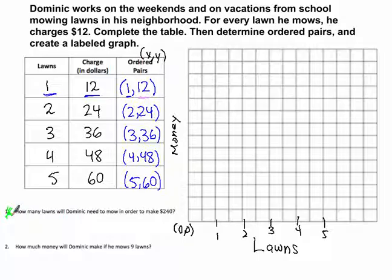Well, our information doesn't extend to $240. And question 2 says, how much money will Dominic need to make if he mows 9 lawns? Our information doesn't extend that far. So instead of going back and solving it mathematically with a table, we want to use our graph to answer those questions. So I'm going to change the interval here. Let's say that each point now represents 2 lawns.